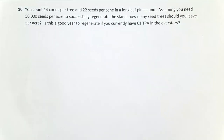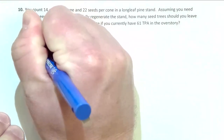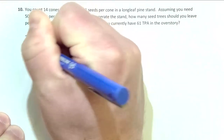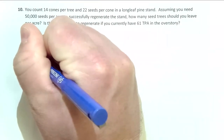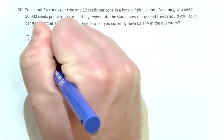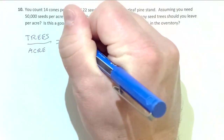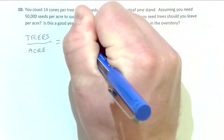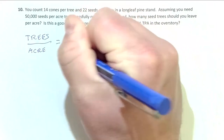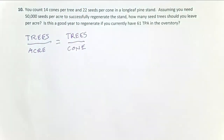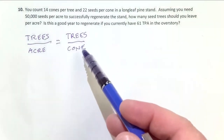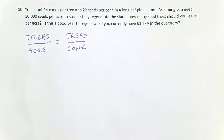As we look at this problem, let me show you first how the units are going to work. What I want as my answer is trees per acre, written as a fraction. To get there, I'm going to need trees per cone, which sounds very counterintuitive — but it's simply the inverse of cones per tree. You can count cones per tree, flip that upside down, and instead of 14 it becomes 1 over 14.